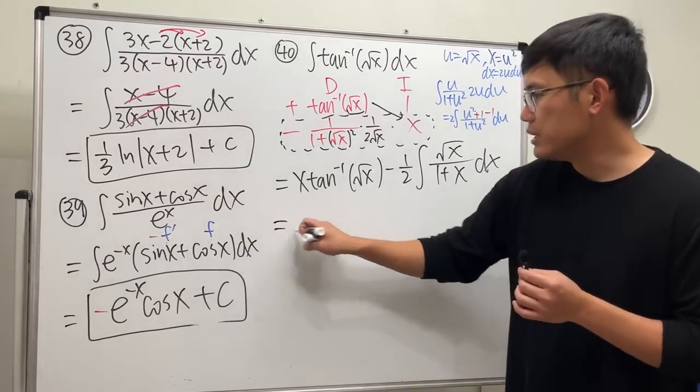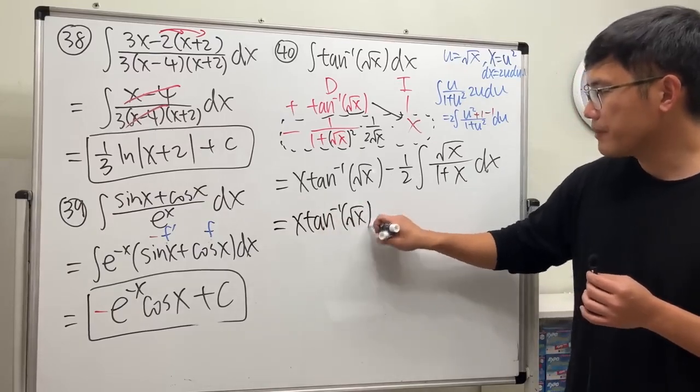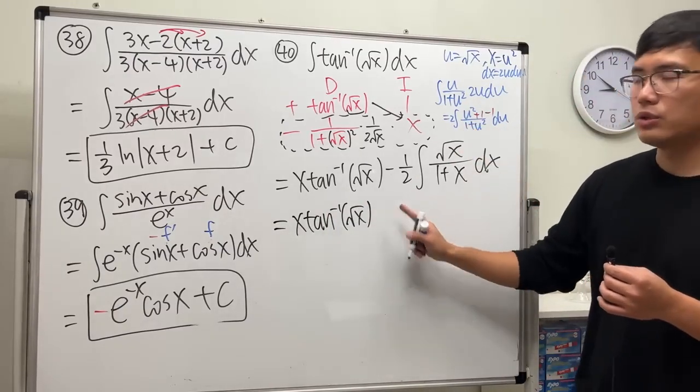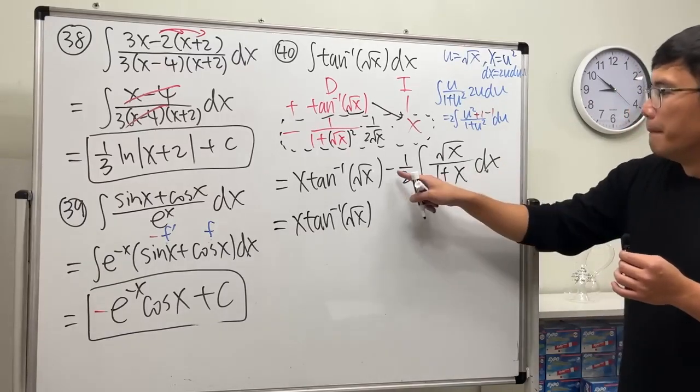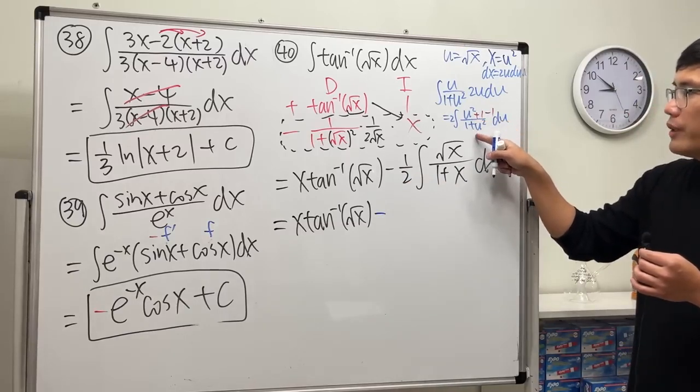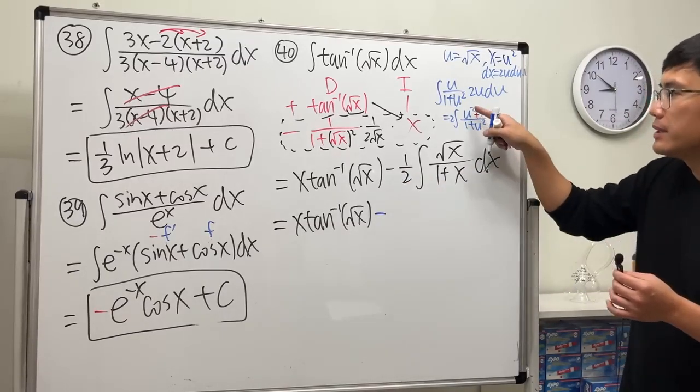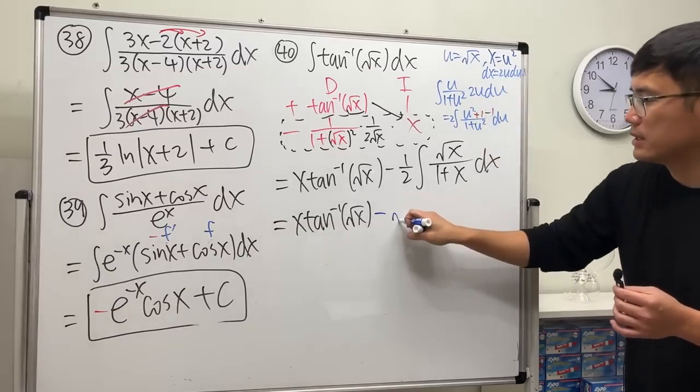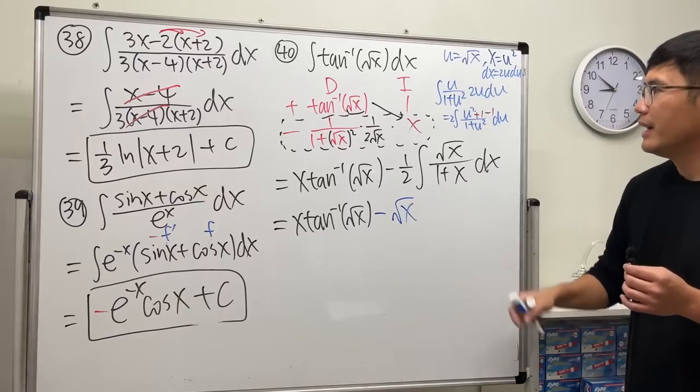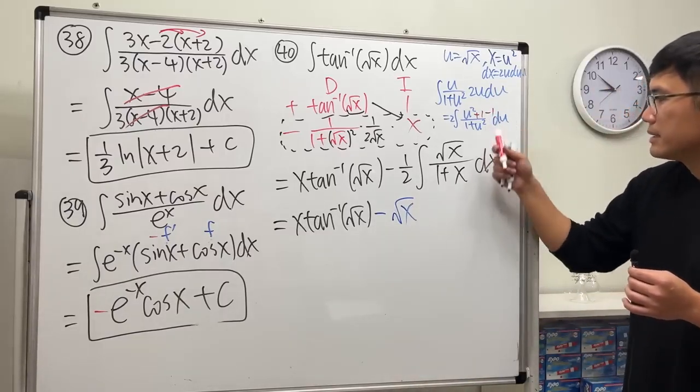Ladies and gentlemen, we get x times inverse tangent of square root of x. This two and that two cancel. Minus. All right, and then we get this over that is one. Integrating one in the u world, we get u. U is square root of x. Then we have a minus minus here.